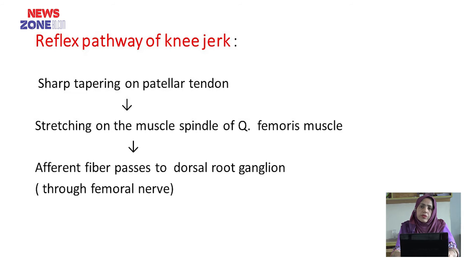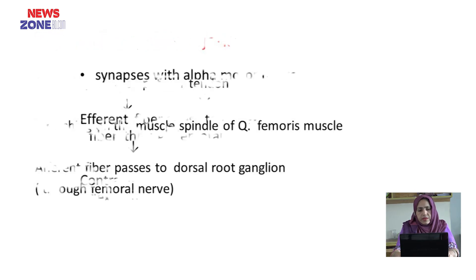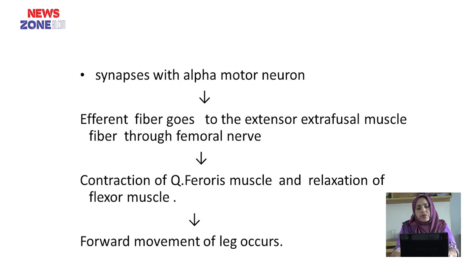Reflex pathway of the knee arc: a sharp tap on the patellar tendon causes stretching of the muscle spindle of the quadriceps femoris muscle. The afferent fiber passes to the dorsal root ganglia through the femoral nerve. It synapses with the alpha motor neuron; the efferent fiber then goes to the extrafusal muscle fiber through the femoral nerve, causing contraction of the quadriceps femoris muscle, relaxation of the flexor muscle, and forward movement of the leg.